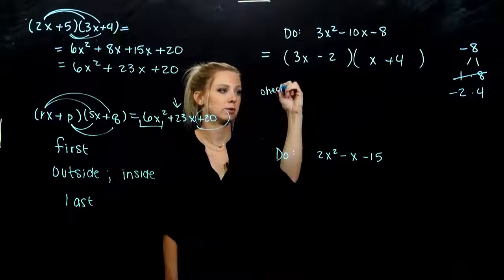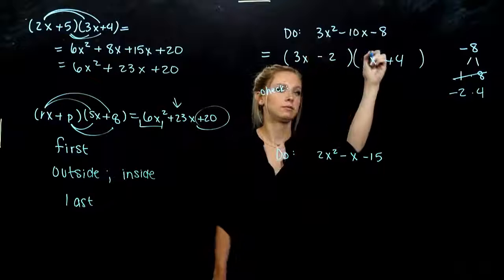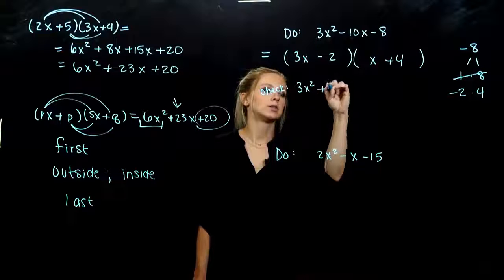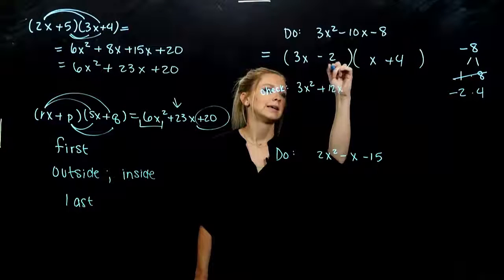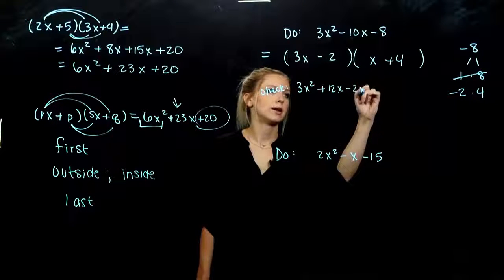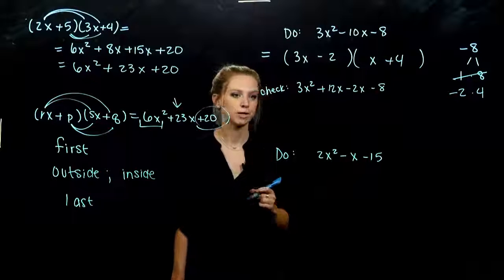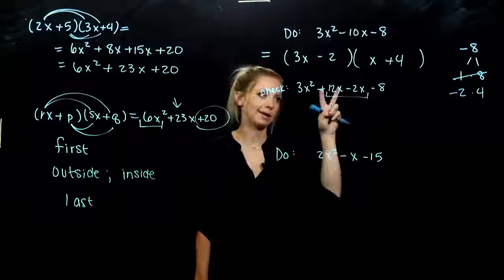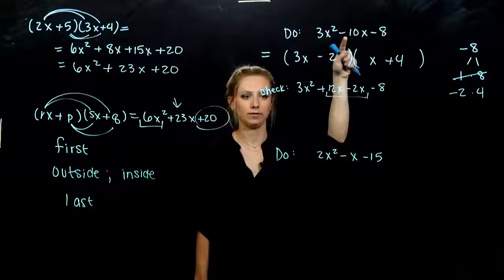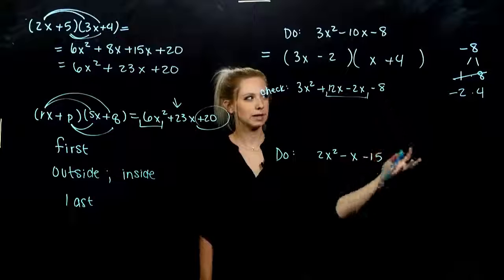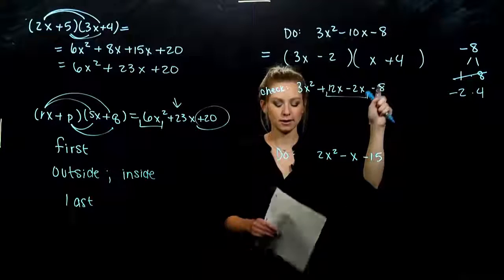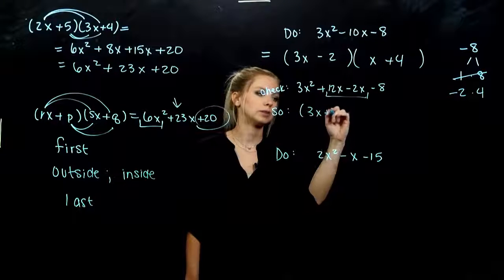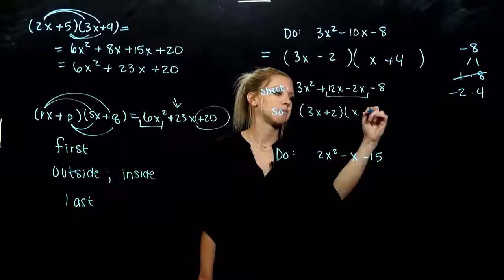So let's check and see what we get. If I FOIL, I'll get 3x squared first. Outer will give me plus 12x. Inner, minus 2x. And last, minus 8. So do we get there with our middle term? No, I did a positive 10. I'm looking for a negative 10. So what does that tell me about my signs? I need to flip those around. So in reality it should be 3x plus 2 and x minus 4.